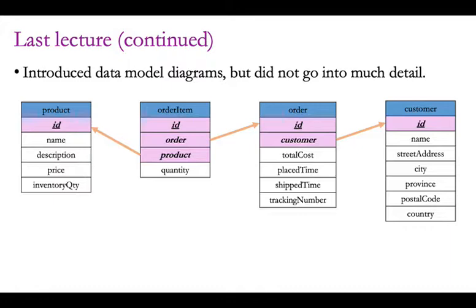We showed data model diagrams like this. We didn't go into a lot of detail, but here we have four tables, and each one of those tables has a different number of columns. The column names are described here. The pink columns are the numeric identifiers — not really real data, but references that can be used to link the different tables.